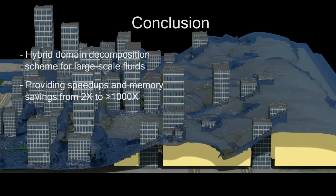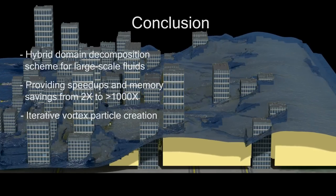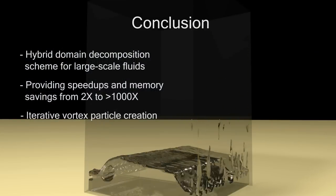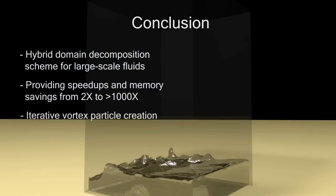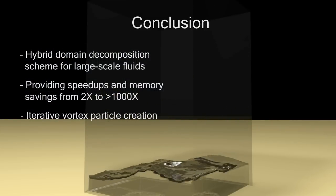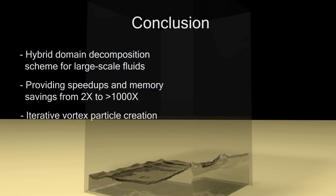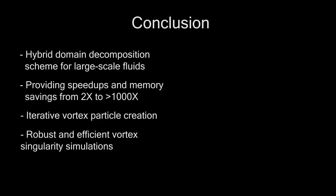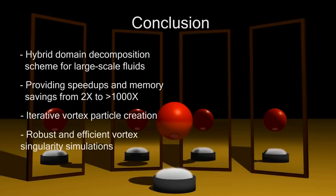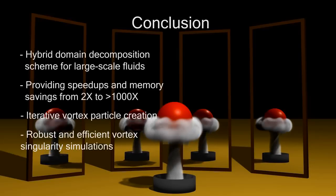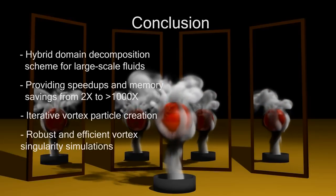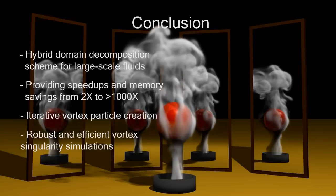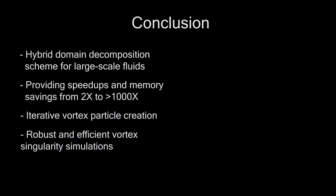This is achieved thanks to a novel coupling algorithm that ensures consistent velocity and vorticity and reduces numerical dissipation. We also propose a sampling algorithm that creates vortex particles to represent a given velocity field. In addition, we propose efficient and robust methods to create vortex sheets that avoid conditioning issues.